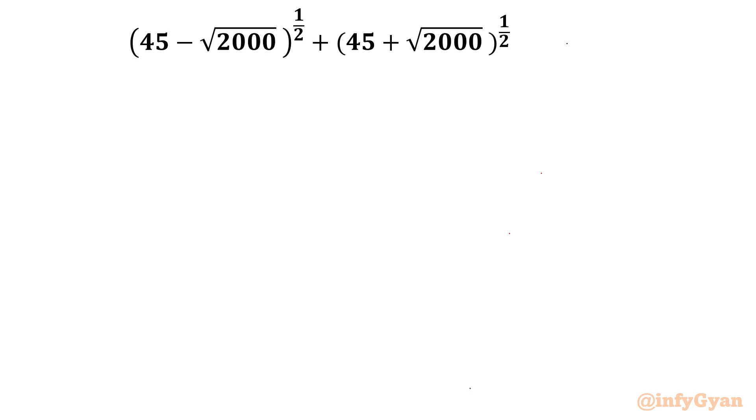Hello friends, welcome to InfiGyan in this very exciting video of Singapore Mathematical Olympiad SMO 2013 where we are going to solve two best problems from algebra. Let's get started with the first one which is √(45 - √2000) + √(45 + √2000).